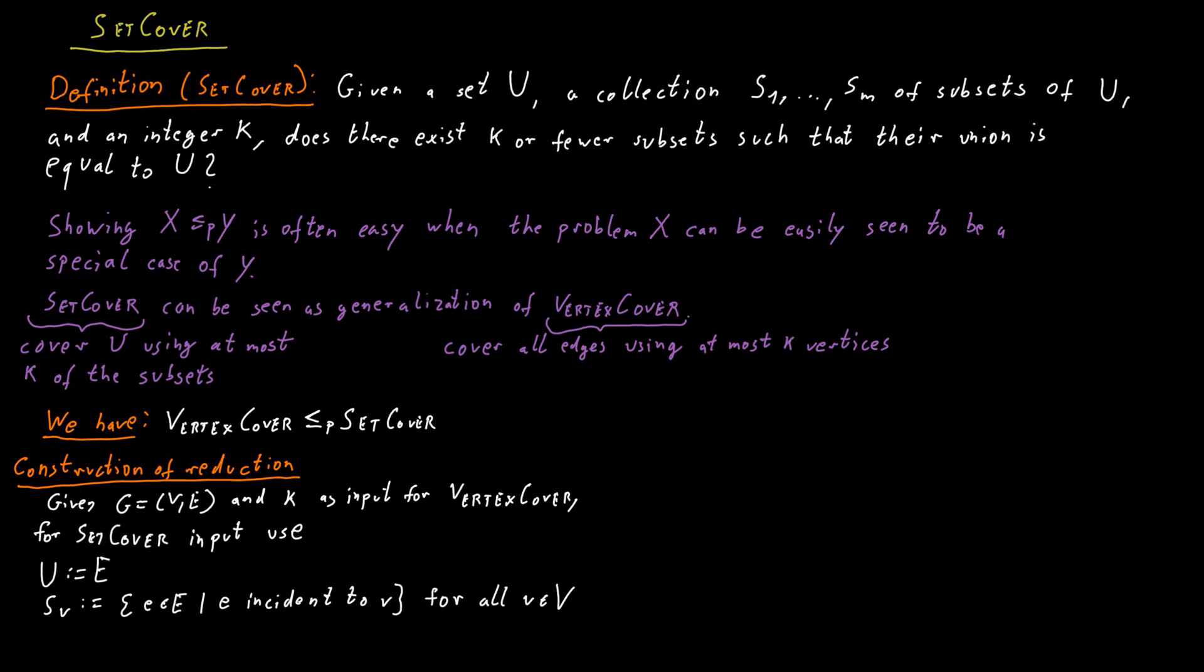And our number k—remember, we want to have at most k of the subsets whose union is equal to U—for the number k, we just use the same number k that we got as an input for Vertex Cover. Now, with this construction, we have the property that there is a Set Cover of size at most k if and only if there was a Vertex Cover of size at most k in the original graph.